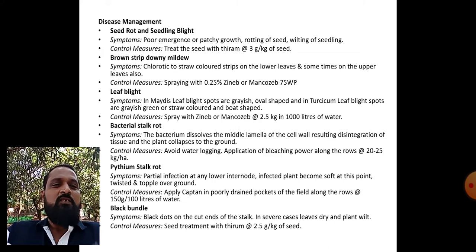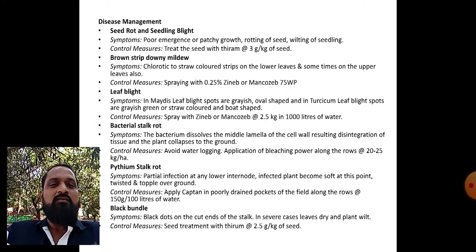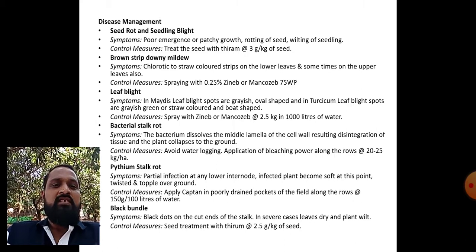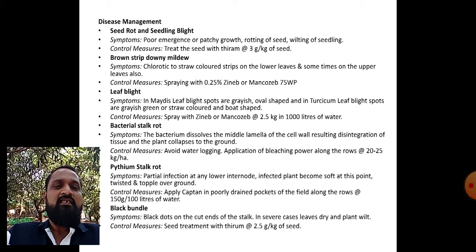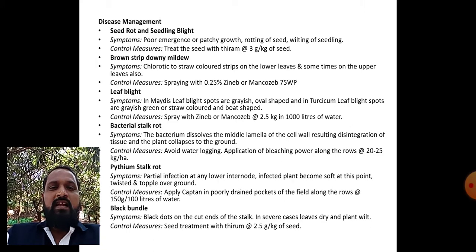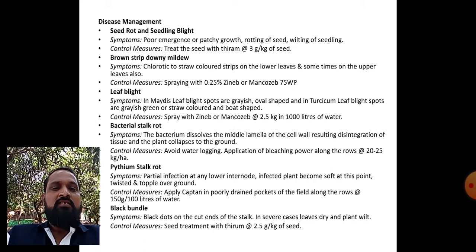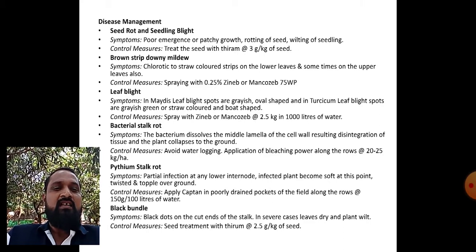To control Pythium stalk rot, apply Captan in poorly drained pockets of the field along the rows at the rate of 150 grams per 100 liters of water. Black bundle disease: symptoms - black dots on the vascular bundles of the stalk; in severe cases leaves dry and plant wilts. To control black bundle disease, treat the seeds with Thiram at the rate of 2.5 grams per kg of seed before sowing.